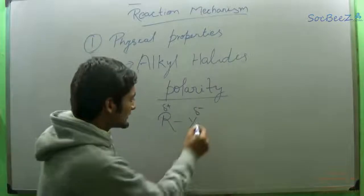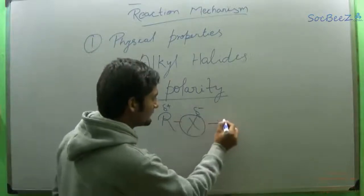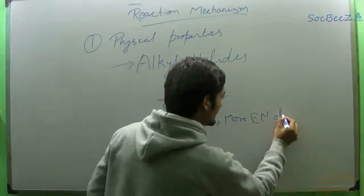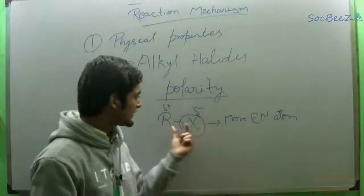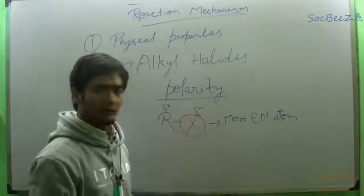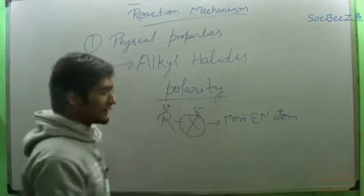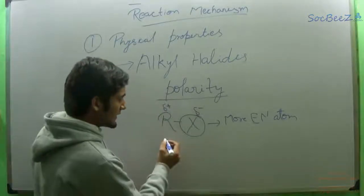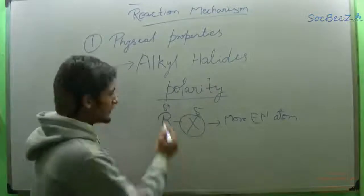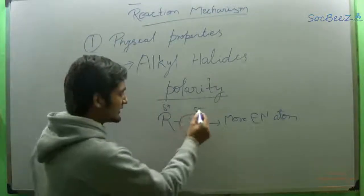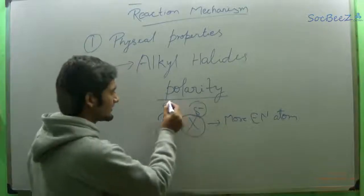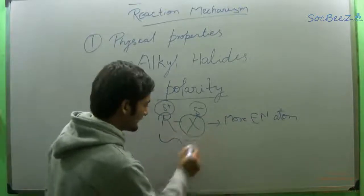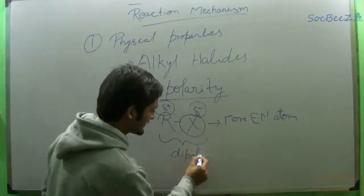For example, in an alkyl halide molecule, the halide is a more electronegative atom. So naturally, it attracts the shared electron pairs towards it and forms a formal negative charge over it. And the alkyl group will have a formal positive charge. Thus, it makes it a dipole — that is, both charges present in the same molecule. Here is a partial negative charge and here is a partial positive charge, and this molecule will be called a dipole.